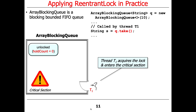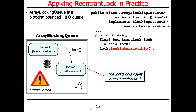We're going to create a new ArrayBlockingQueue with a capacity of 10, and it's going to be a blocking queue of strings. Thread T1 will call the take method on this queue and block because there's nothing in the queue yet. On the right-hand side I'll show you the code; on the left-hand side a visualization. When take is called, we try to get into the critical section by calling lockInterruptibly. We get in because nobody owns it — the count was zero — and calling lockInterruptibly increments the hold count to one.